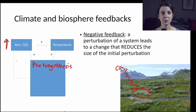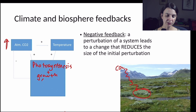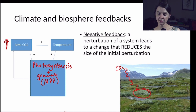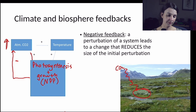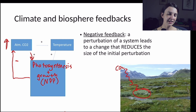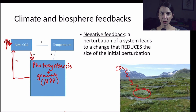So increased atmospheric CO2 could lead to higher photosynthesis and plant growth, which we refer to as net primary productivity. Such an increase in net primary productivity leads to more CO2 being sucked out of the atmosphere. And that is going to tend to have a negative impact on atmospheric CO2. So that initial increase in atmospheric CO2 is going to tend to be reduced more than it would otherwise if those plants weren't responding in the way that they were.